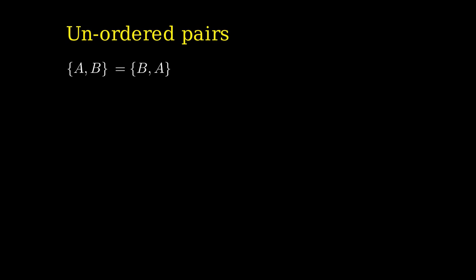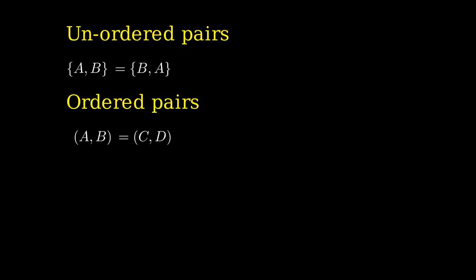I want to stress that what we have here are not ordered pairs, because the set with elements A and B is the same thing as the set with elements B and A. If we want to define ordered pairs where order makes a difference, we need to remember that the characteristic property of ordered pairs is that two ordered pairs (A, B) and (C, D) are equal if and only if A equals C and B equals D.